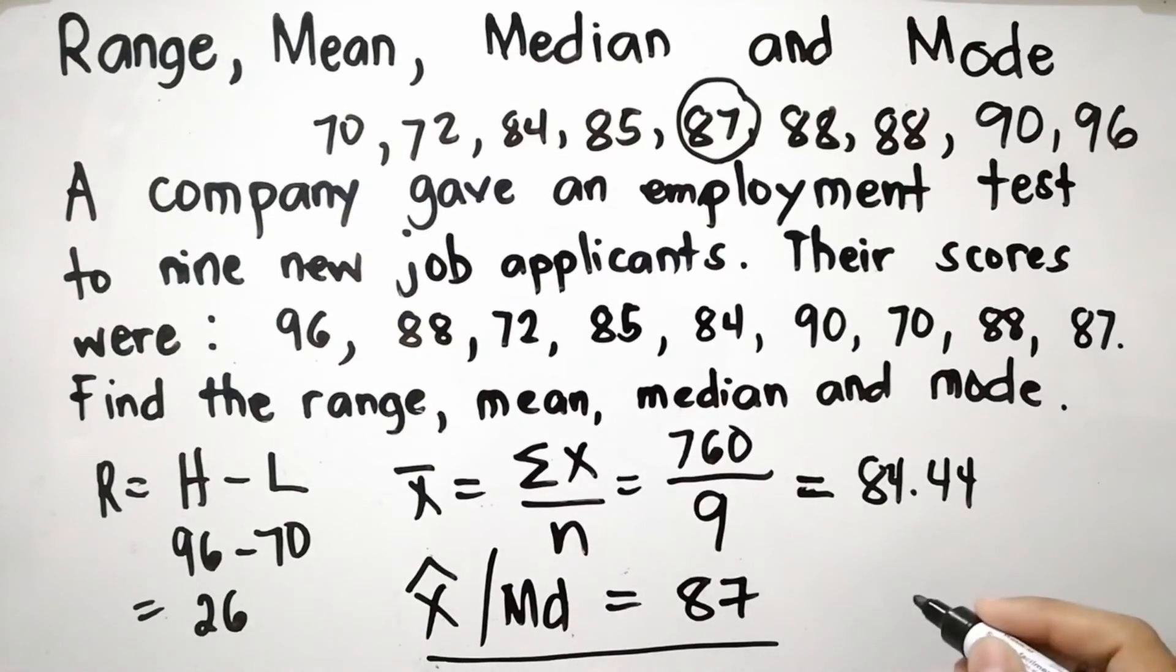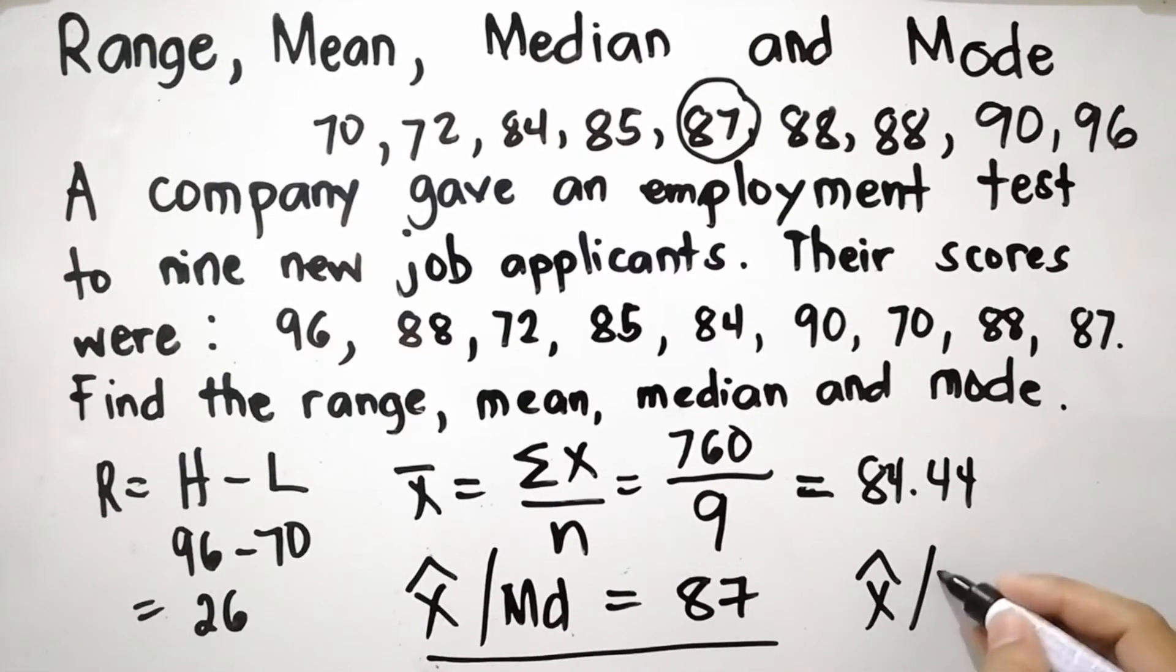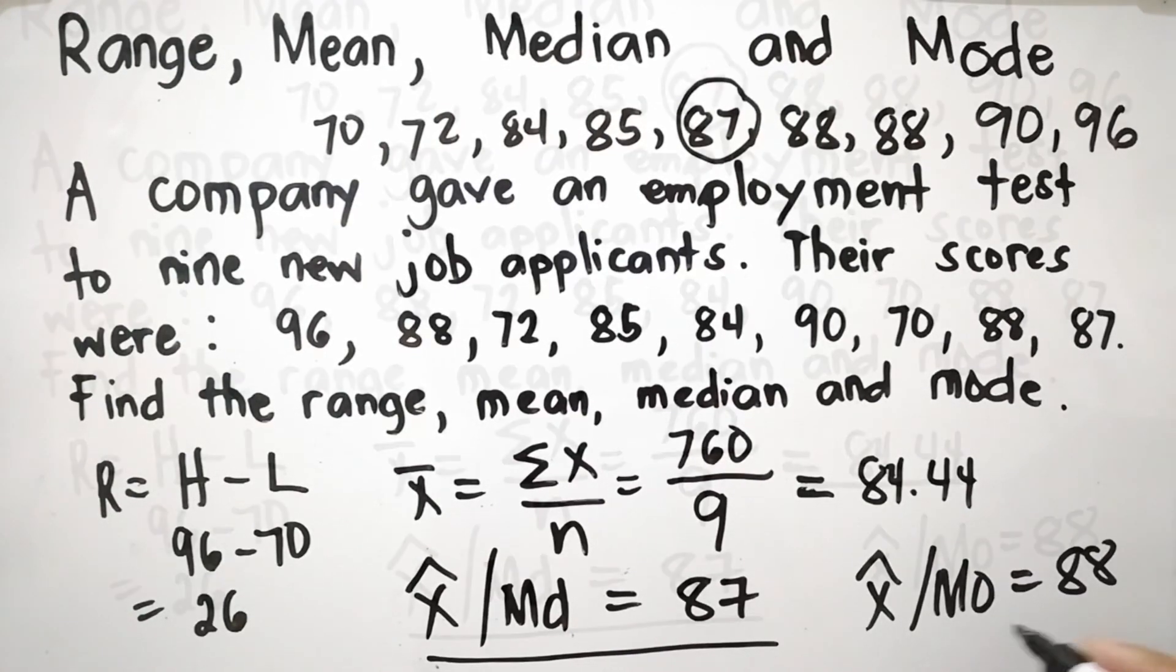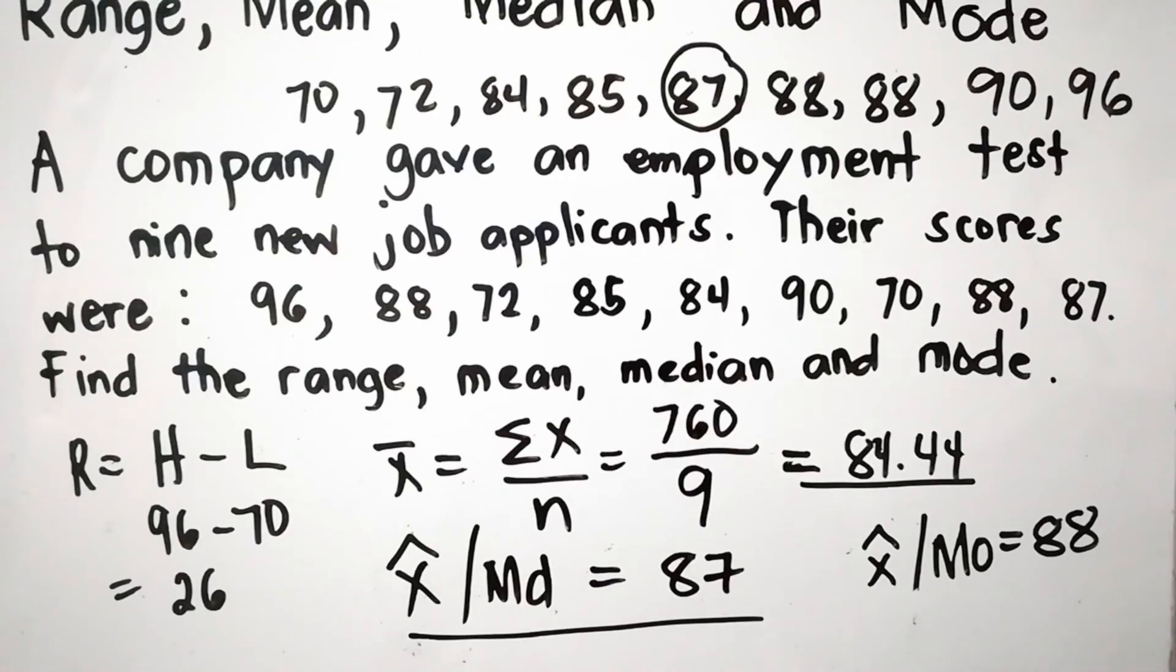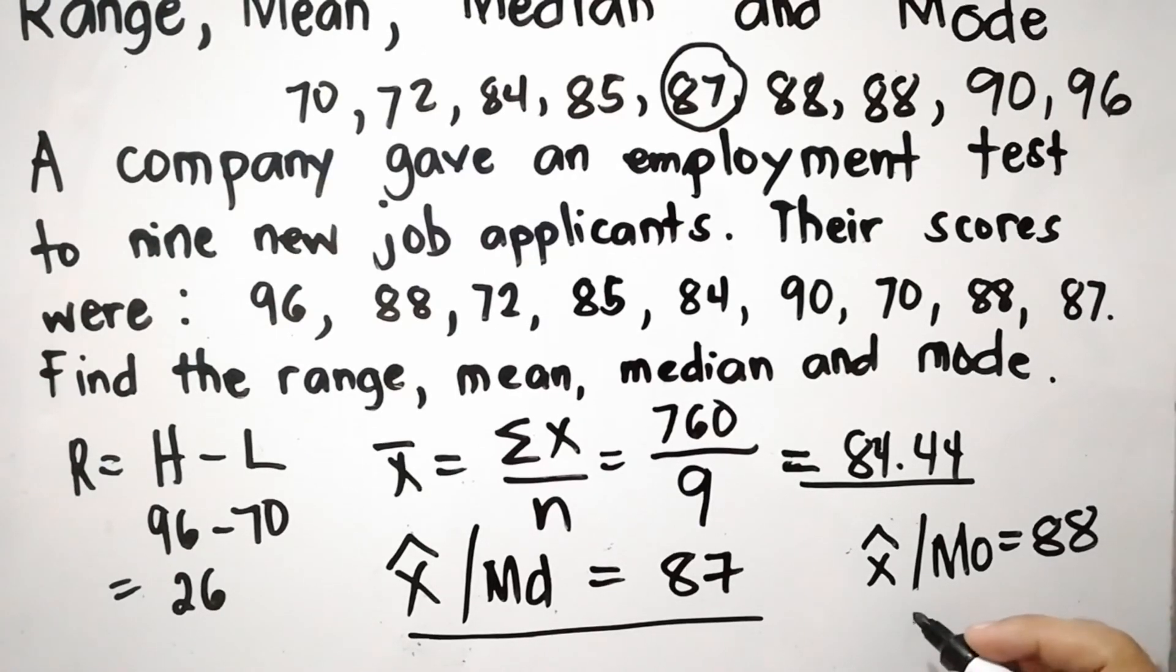So, mode denoted as X-hat or MO is equal to 88. Since the mode corresponds to only one element, it is classified as unimodal.